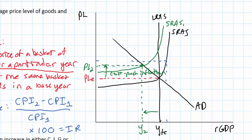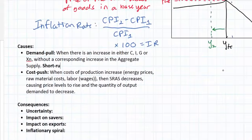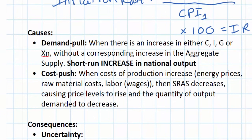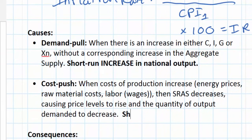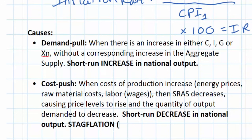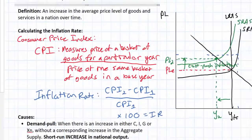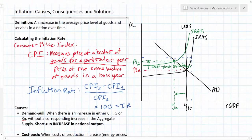Rising costs of production have increased the average price level to PL2, and at the same time output has actually fallen. One of the main differences between cost push and demand pull inflation is that demand pull inflation produces a short run increase in national output, whereas cost push inflation produces a short run decrease in national output. Cost push inflation leads to what we call stagflation — stagnant economic growth with inflation. In contrast, an increase in aggregate demand causes short run economic growth and inflation.